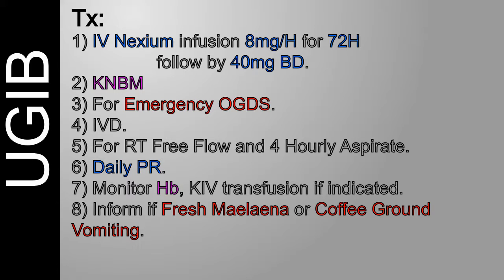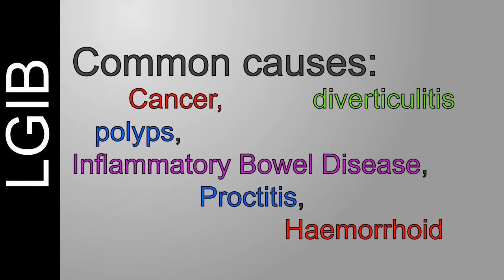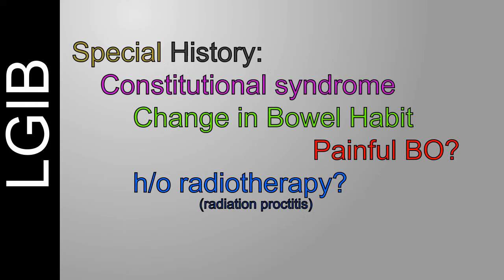Think about tranexamic acid and vitamin K. Basically the patient is going to be involved for a few days. If there is still melena, you need to be alarmed. When the patient has fresh melena or coffee ground vomiting, it means the patient has a fresh bleed. LGIB can be caused by GI malignancy, bleeding diverticulitis, polyps, IBD, proctitis, and haemorrhoids.